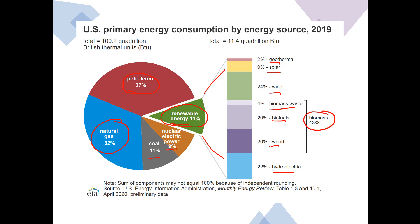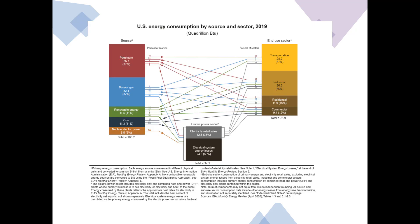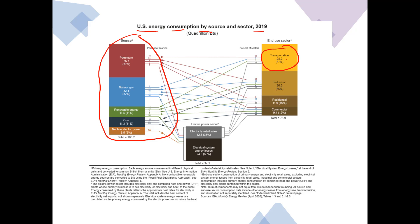Another graph from that same site looks at U.S. energy consumption by source and sector. Taking the U.S. primary energy consumption by energy source from the prior slide and putting it into a bar format split by percentage. Looking at sector, there are four sectors: transportation consumes about one-third of our energy, industrial accounts for about another third, and then combined residential and commercial makes up a little over 20%.